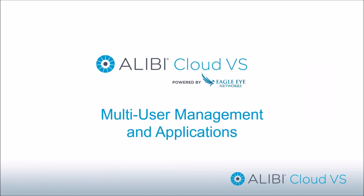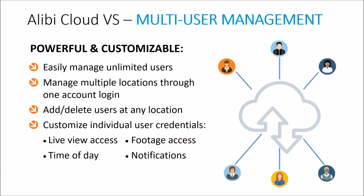The second application is multi-user management — one of the most powerful features of the Cloud VS system. Because it is centralized, we can easily manage users in one location with an unlimited number of users. On-premise solutions with Alibi are powerful but have a limitation of 32 total users for a traditional Alibi recorder. With a Cloud VS platform, we can have unlimited users.